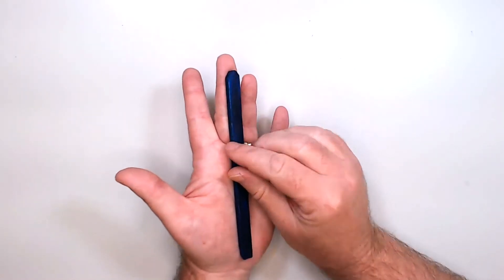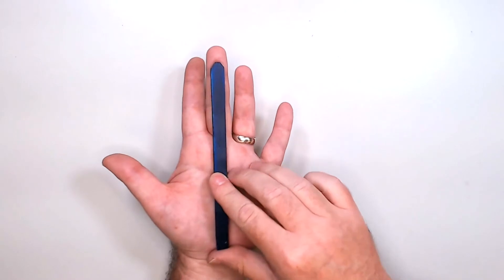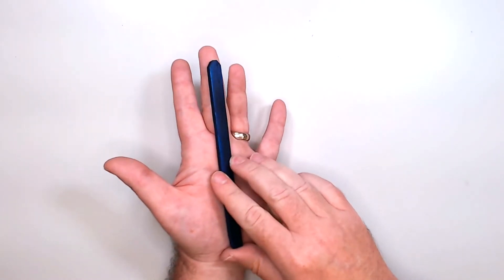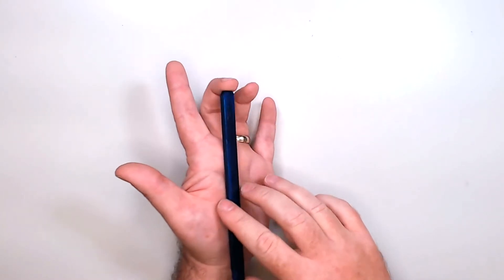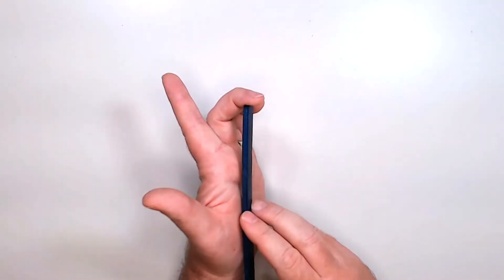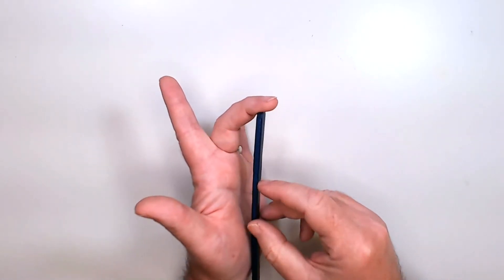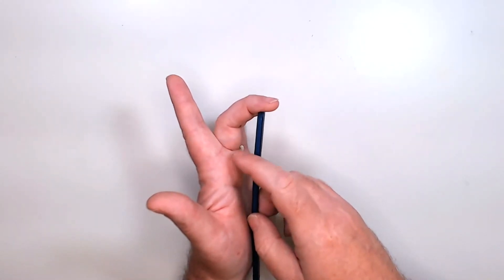When you contract that muscle, it serves to flex the distal interphalangeal joint and helps flex the proximal interphalangeal joint as well as the metacarpal phalangeal joint.